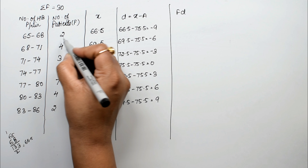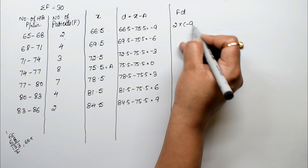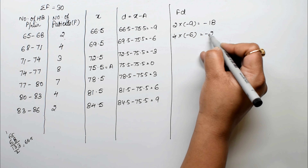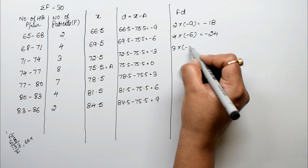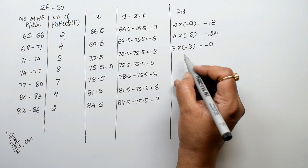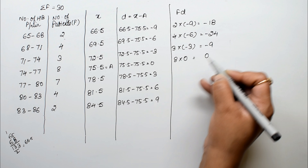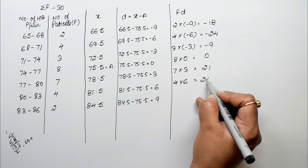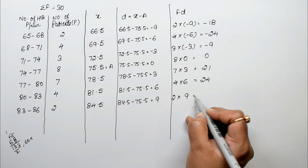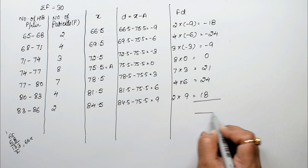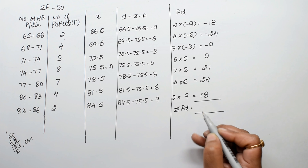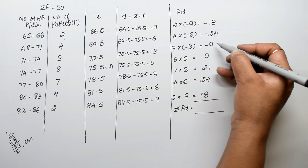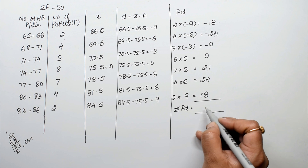Now computing fd: 2 into minus 9 equals minus 18, 4 into minus 6 equals minus 24, 3 into minus 3 equals minus 9, 8 into 0 equals 0, 7 into 3 equals 21, 4 into 6 equals 24, and 2 into 9 equals 18. The positive values 21, 24, 18 and negative values cancel partially, leaving summation fd equals 21 minus 9 equals 12.